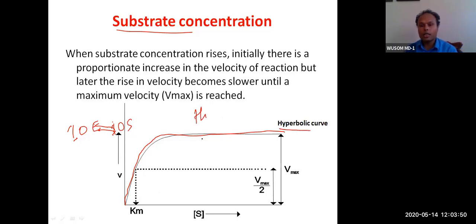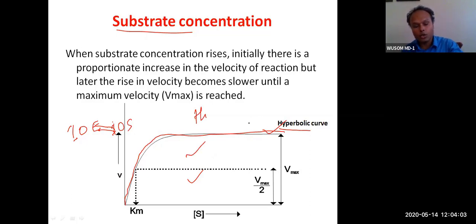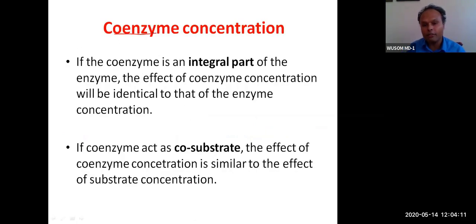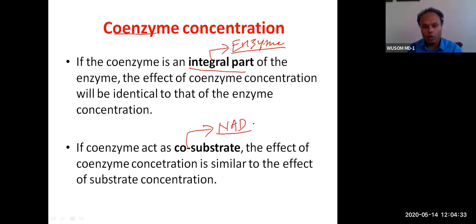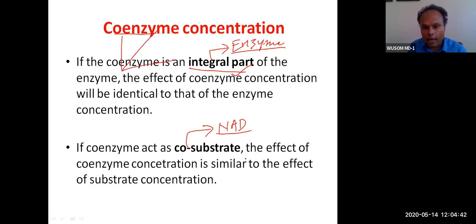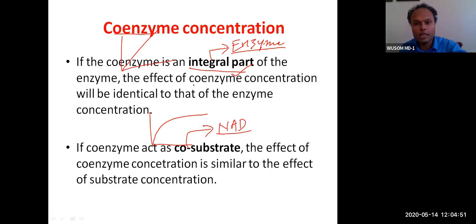For coenzymes: if the coenzyme is an integral prosthetic group, it behaves like the enzyme itself — producing a straight-line curve. If it is loosely bound (like NAD), it behaves more like a substrate — producing a hyperbolic curve.